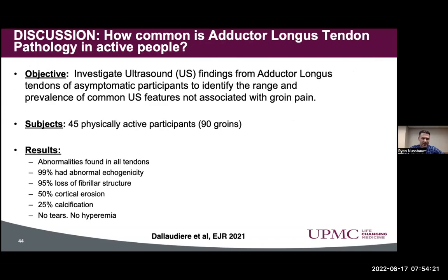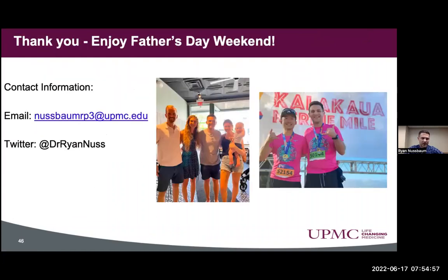A recent study by Dalia Darin, EJR 2021, is worth sharing. They looked at how common adductor longus tendon pathology is in active asymptomatic people. With 45 people and 90 groins evaluated with ultrasound, abnormalities were found in all tendons. We should expect to see some abnormality, particularly in active individuals — it's really our job to determine what is the actual pain generator. Thanks again, and for any fathers on the call, enjoy your Father's Day weekend.